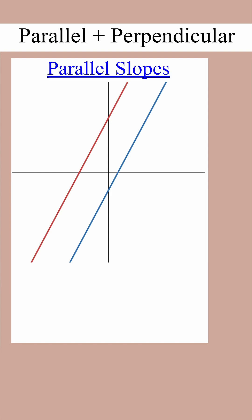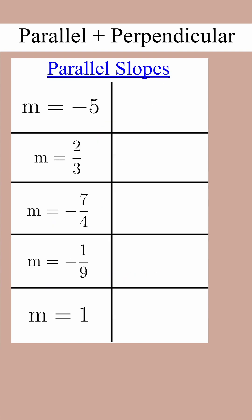Parallel lines never cross, and their slopes are the same. In these examples, the slope of a corresponding parallel line is just the same number.